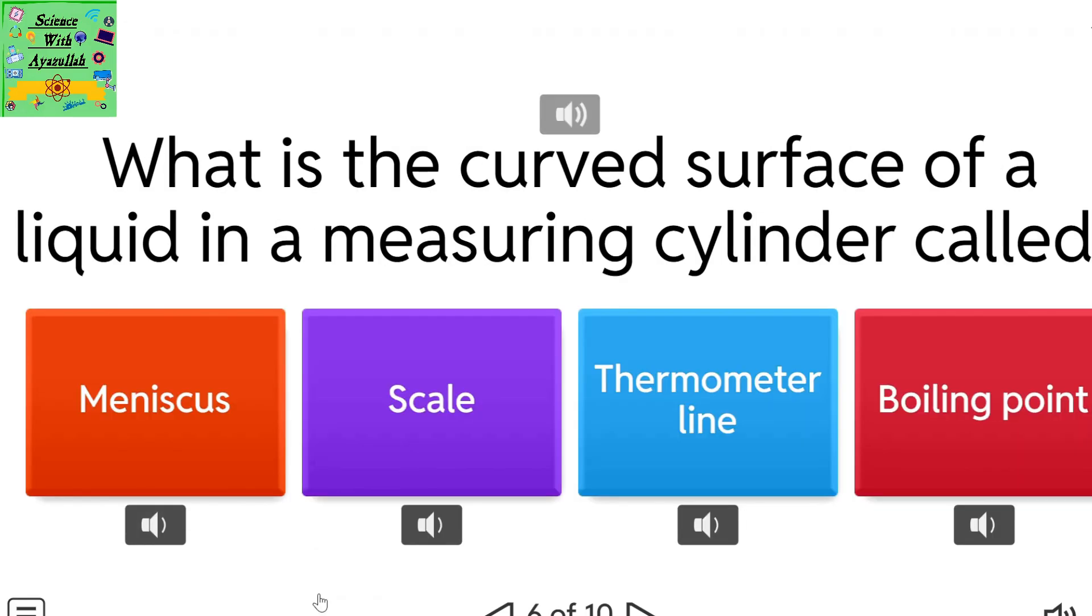What is the curved surface of a liquid in a measuring cylinder called? Meniscus. Scale. Thermometer line. Boiling point.